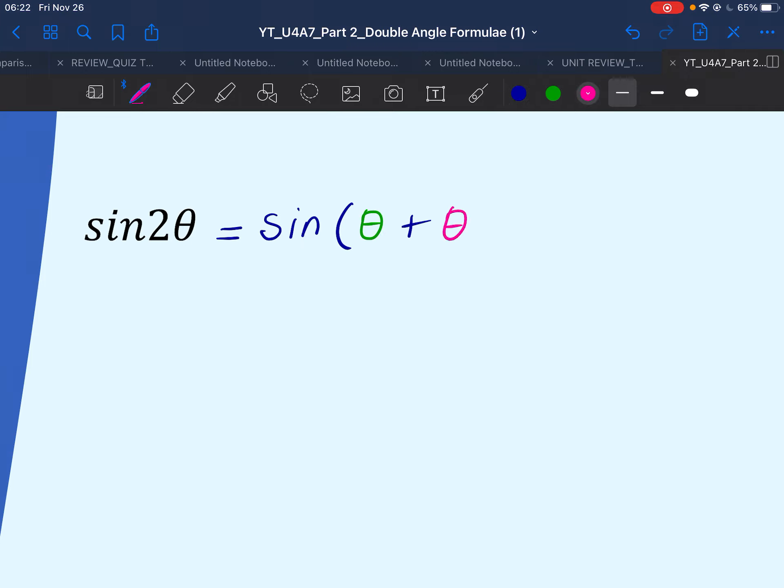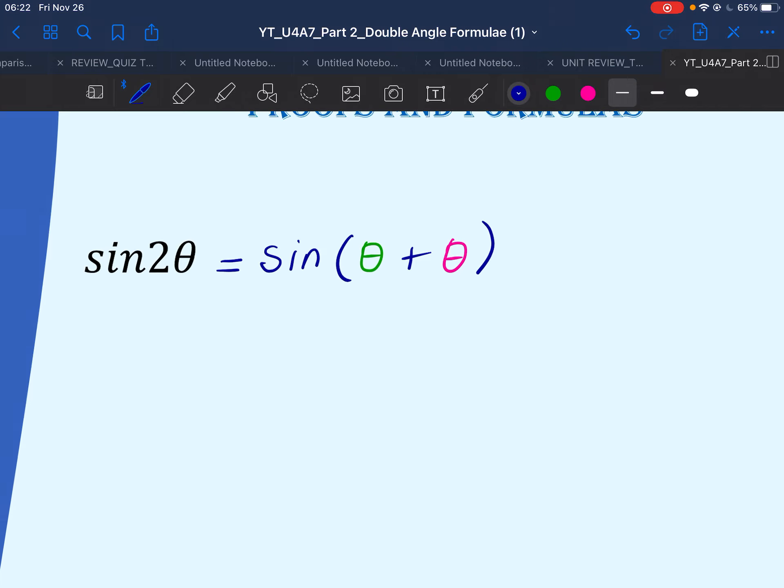And if you remember your compound angle formulas for sine of the sum of two angles, so sine A plus B, which equals sine A cos B plus cos A sine B,